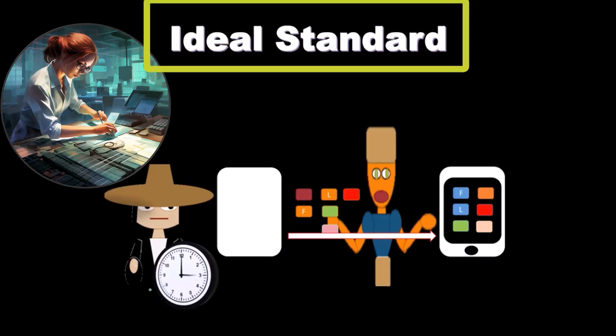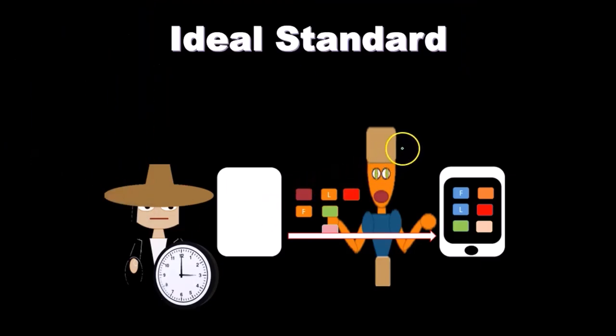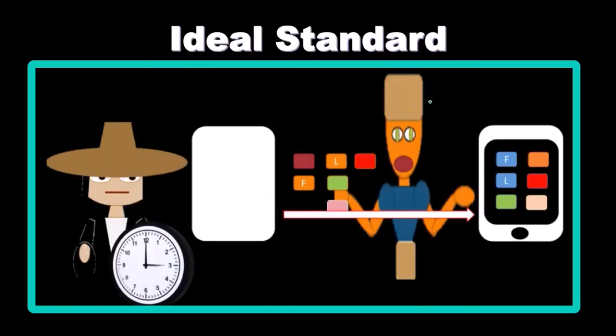And so note that if we make our projections based on ideal standards, then we're never going to be able to reach those projections because this person, this worker here, as they put things together, is going to have fatigue. At some time, they're going to slow down, and sometimes they're going to go to the bathroom. There's going to be normal things that happen.